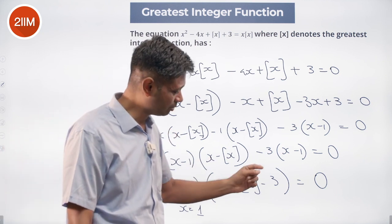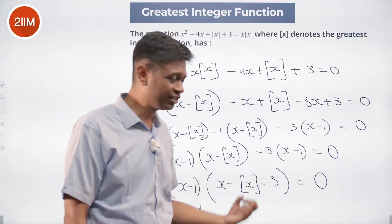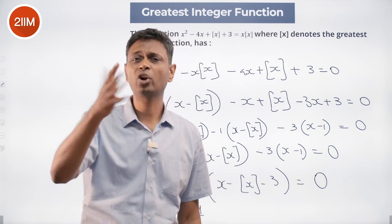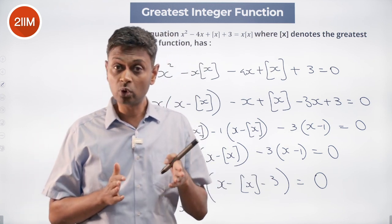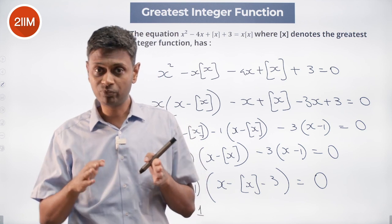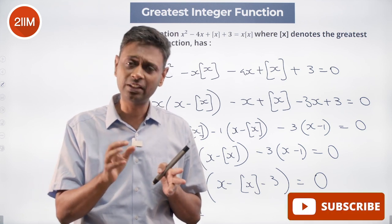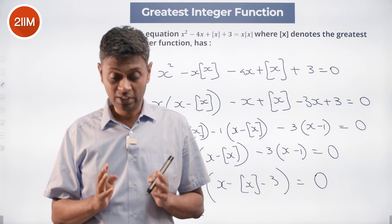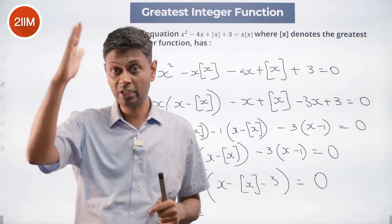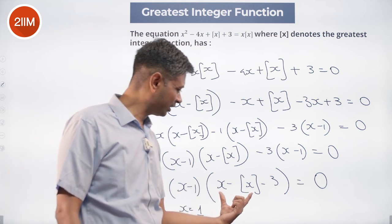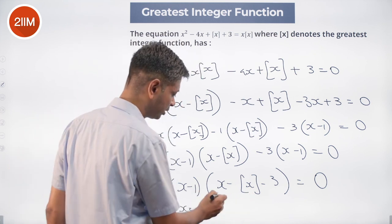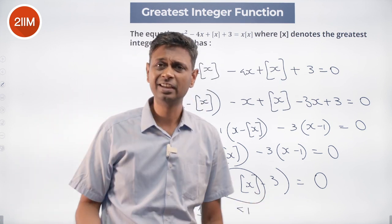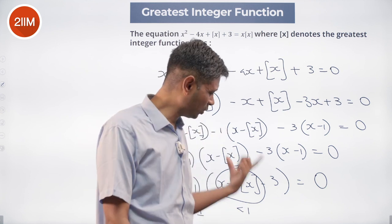Now consider x minus greatest integer of x minus 3 — when will it go to 0? The greatest integer of x is the greatest integer less than or equal to x. x minus greatest integer of x cannot be 1 or more. For example, anything from 3 to 4 has greatest integer 3; from 4 to 4.9999 the greatest integer is 4. So x minus greatest integer of x is always less than 1. A number less than 1 minus 3 cannot equal 0.